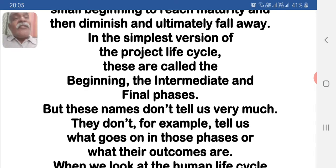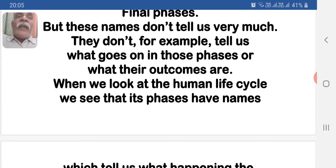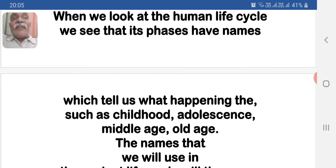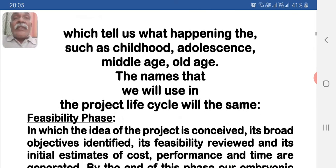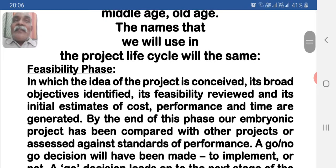But these names don't tell us very much. They don't, for example, tell us what goes on in those phases or what their outcomes are. When we look at the human life cycle, we see that its phases have names which tell us what is happening — such as childhood, adolescence, middle age, and old age. The names that we will use in the project life cycle will be similar.